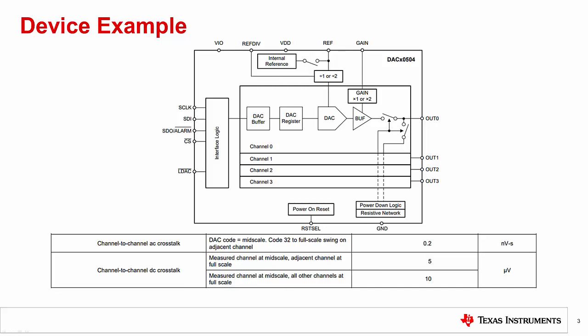Now let's look at an example of a DAC's channel-to-channel crosstalk specification. Consider the DAC80504, which is a 16-bit DAC with four channels and an optional external reference. This device shares a single reference buffer for all four channels. Here we have specified that the AC crosstalk for the device is 2 nanovolt-seconds. This is measured on a channel which is at mid-scale output, while the adjacent channel has nearly a full-scale transition.